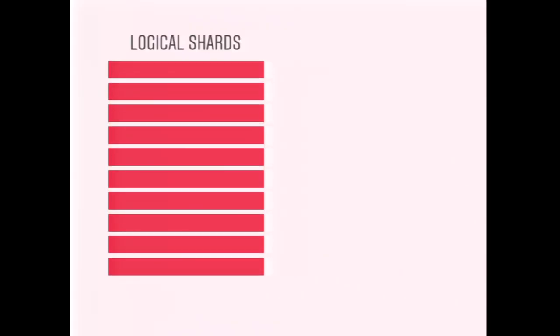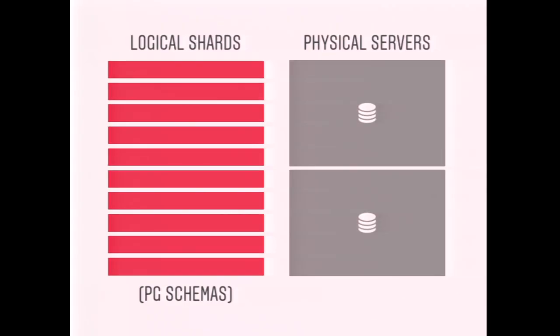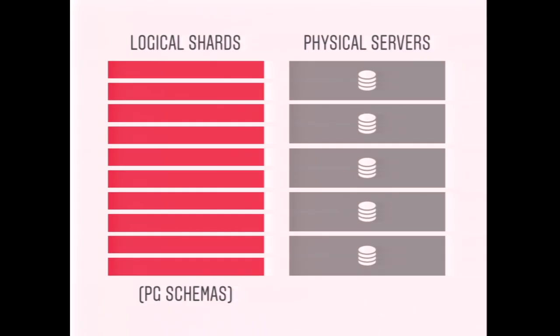We took all of those many likes, too many for one Postgres server, and split them up into several thousand logical shards — split according to the user ID of the user whose photo or video had been liked. We mapped these to Postgres schemas, which in Postgres is more like a namespace that can contain tables. Multiple schemas can live on a single physical server, so this allowed a mapping from logical shards to physical servers that could grow over time without having to re-bucket the data — just updating the mapping from a logical shard to a physical server.